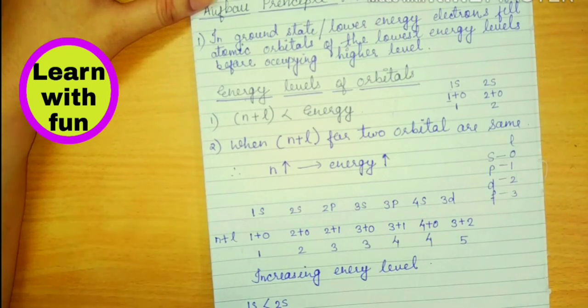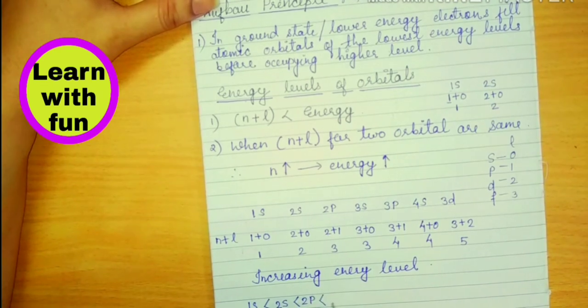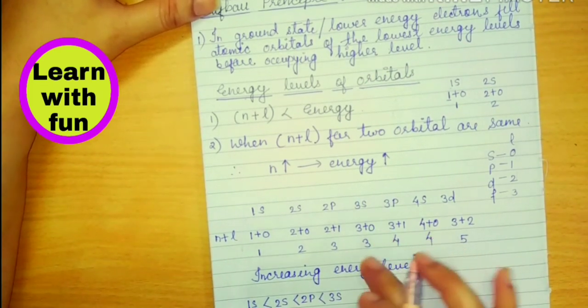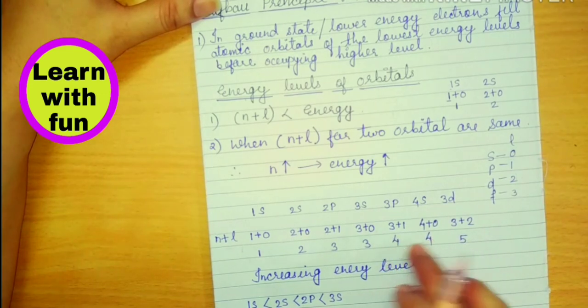So 3S is higher. So 3S energy will be more. So we will write 2P first then 3S which is higher. It will come later.